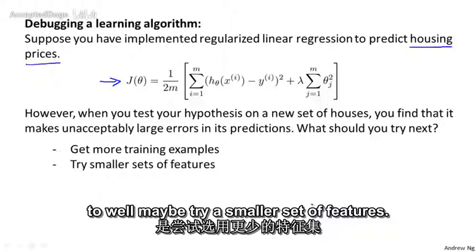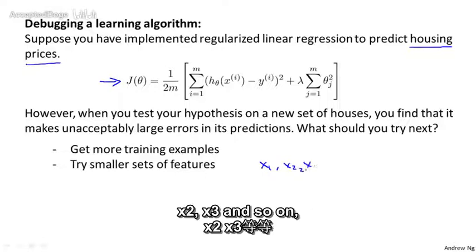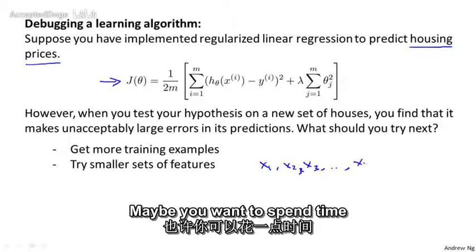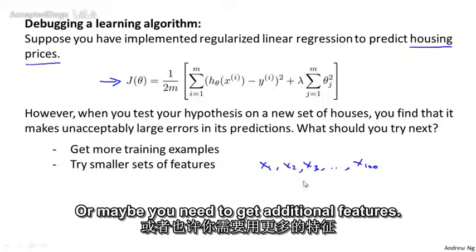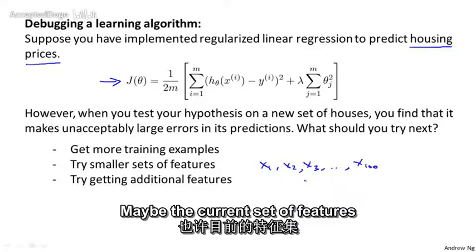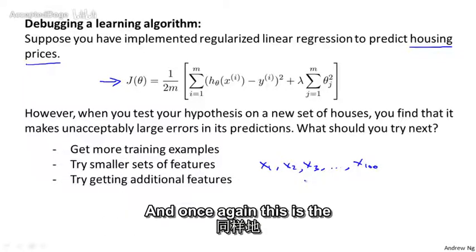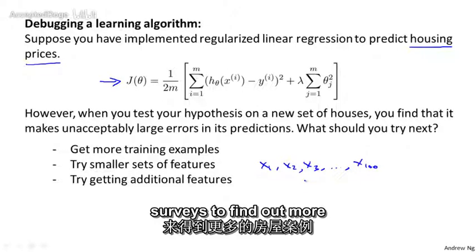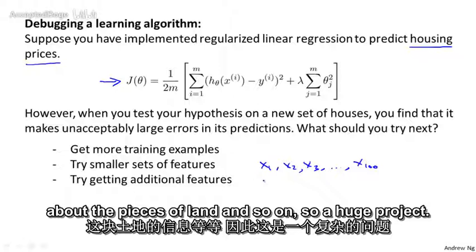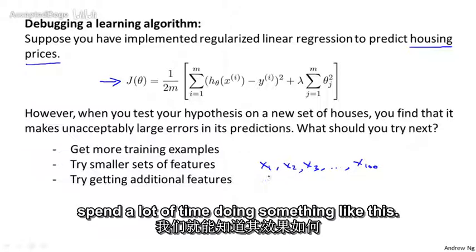Other things you might try are to maybe try a smaller set of features. So if you have some set of features, x1, x2, x3, and so on, maybe a large number of features, maybe you want to spend time carefully selecting some small subset of them to prevent overfitting. Or maybe you need to get additional features. Maybe the current set of features aren't informative enough, and we want to collect more data in the sense of getting more features. And once again, this is a solid project that can scale up to be huge projects. You can imagine, again, phone surveys to find out more about houses, or extra land surveys to find out more about the pieces of land and so on. So a huge project. And once again, it would be nice to know in advance if this is going to help before we spend a lot of time doing something like this.